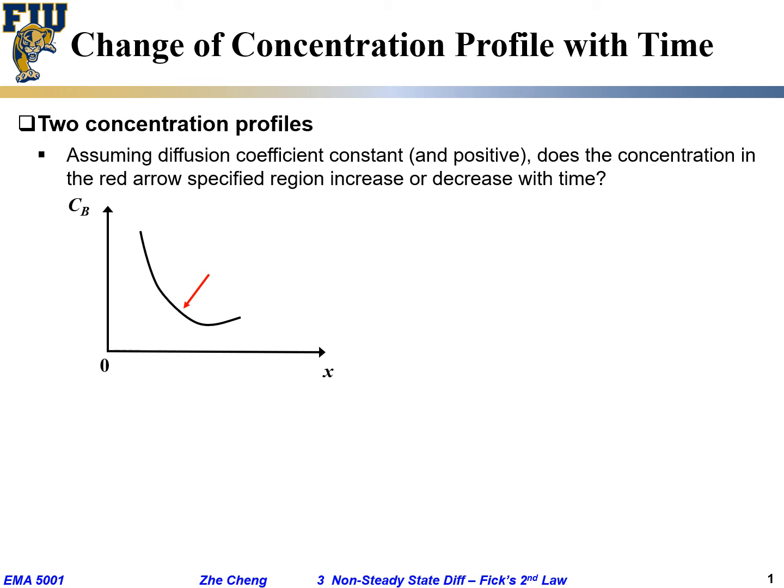Now let's have a simple example that shows the implication of Fick's second law. What do we have here? We're plotting C for concentration with respect to location.